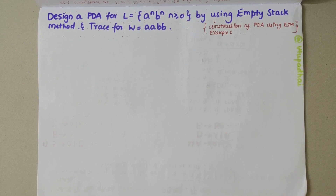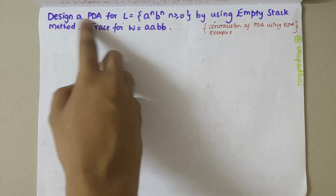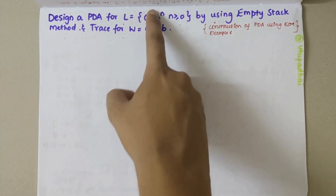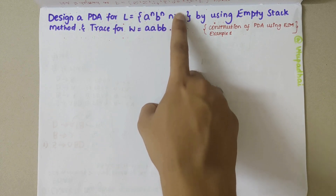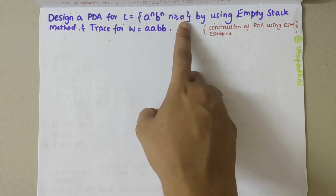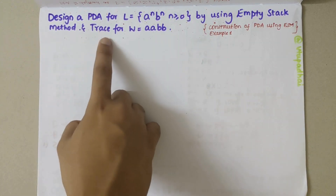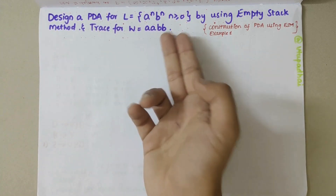In this video we'll be looking into construction of PDA using the empty stack method. Considering the first example, we need to design a PDA for language L = aⁿbⁿ where n ≥ 0, using the empty stack method, and we need to trace for the given string w = a²b².